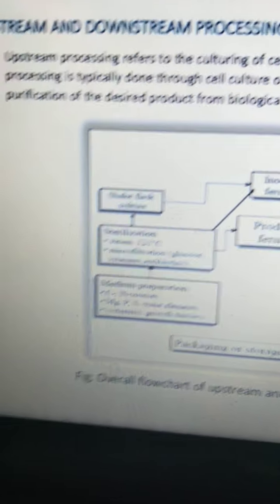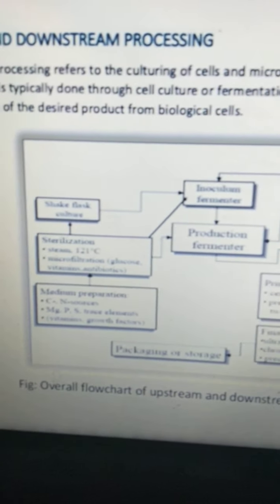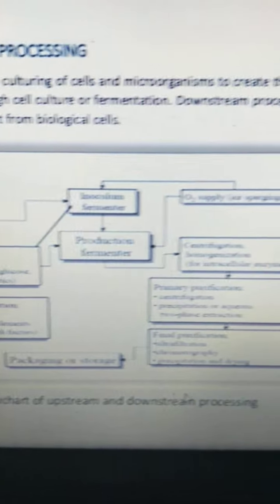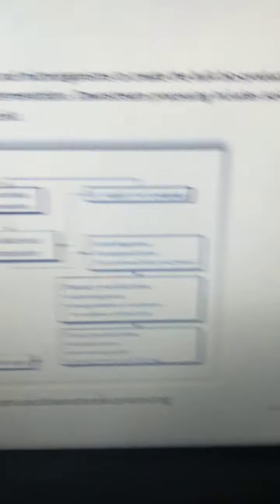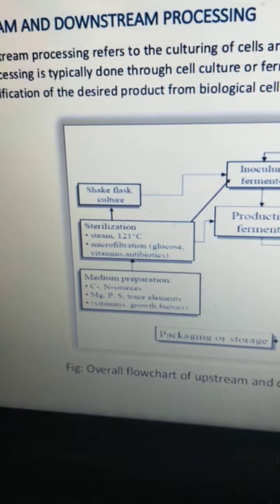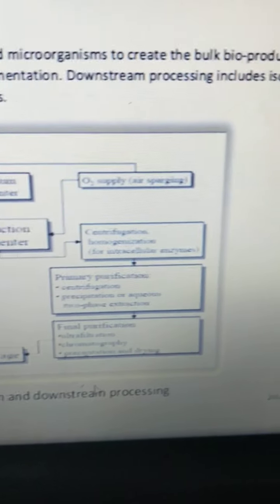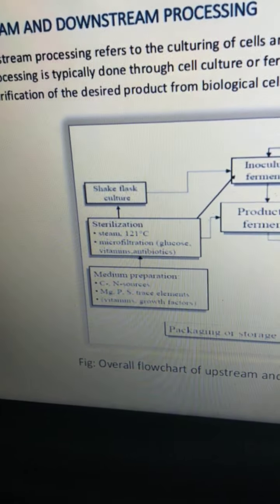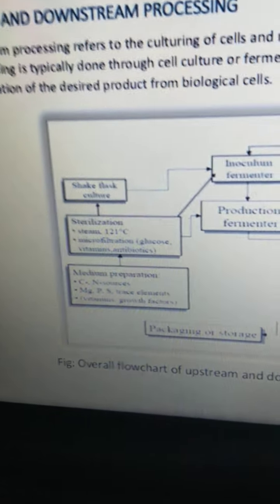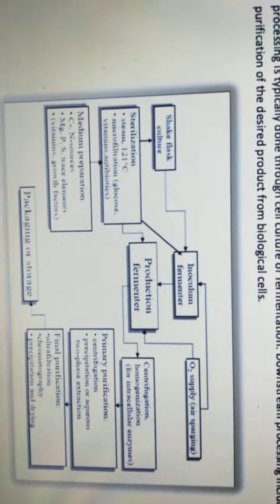Upstream and Downstream Processing. Upstream processing refers to the culturing of cells and microorganisms to create the bulk bioproduct. This processing is typically done through cell culture or fermentation. Downstream processing includes isolation and purification of the desired product from the biological cells. Here is the flow chart which is shown.